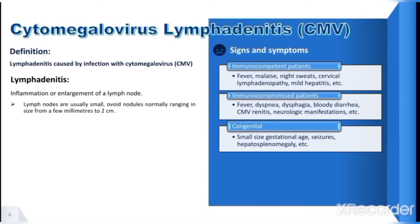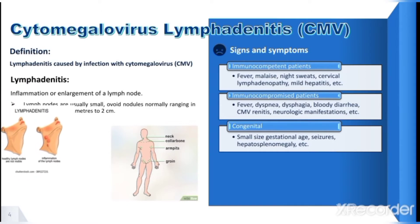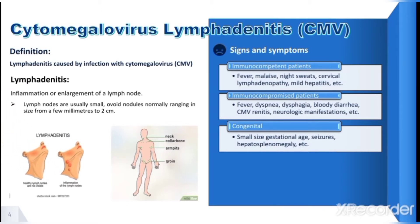Cytomegalovirus lymphadenitis can be characterized by inflammation or enlargement of lymph nodes due to CMV infection. Lymph nodes are usually small oval nodules, normally ranging in size from a few millimeters to 2 centimeters. Signs and symptoms of CMV lymphadenitis differ according to individual health status. They include fever, malaise, night sweats, cervical lymphadenopathy, and mild hepatitis for immunocompetent patients.